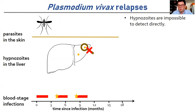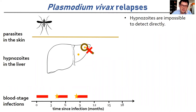These hypnozoites are impossible to detect directly with current diagnostics. They're also really difficult to treat. There's only one widely available drug called primaquine, which can be used to kill these hypnozoites in the liver. But this is a very dangerous drug because it can cause episodes of hemolysis in some individuals and kill them.